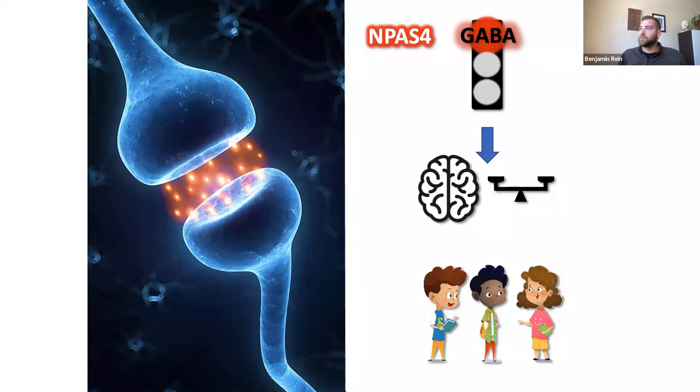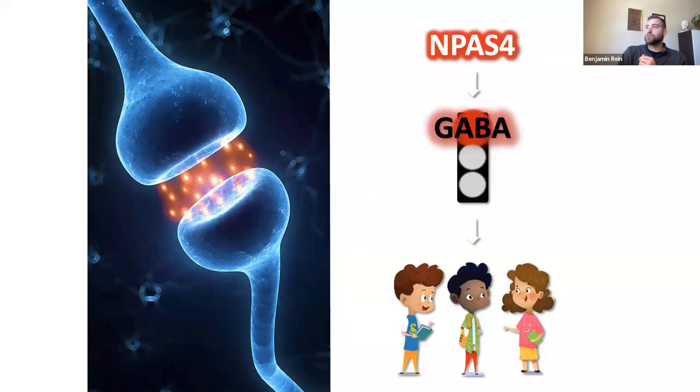But I didn't really think that was, I thought that was a little bit too much. So I ended up simplifying to just this right here, that at the very top, we have MFASP4, which builds GABA synapses, which are red lights, which have some relationship to sociability. And now, this slide.